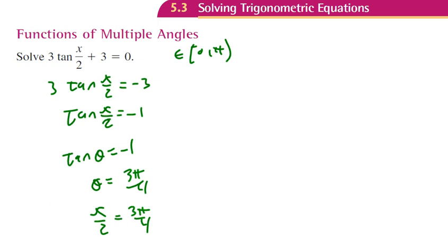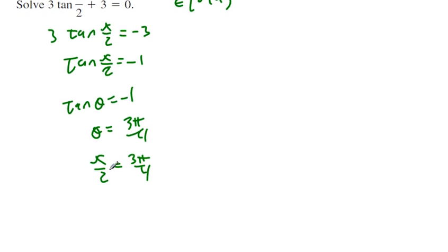Now let's solve for x, since that's what we're really trying to find. Multiply both sides by 2. The 2s cancel, and simplifying: 2 goes into 4 two times, so x equals 3π over 2.